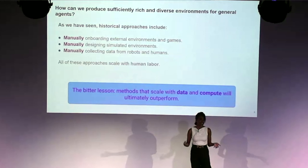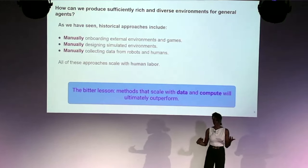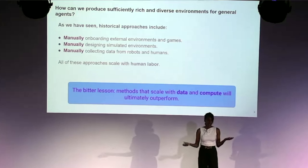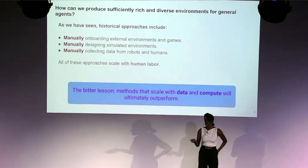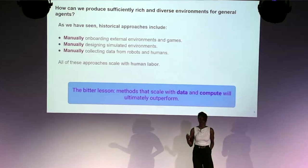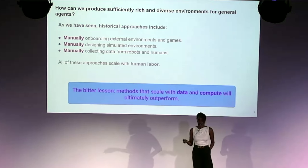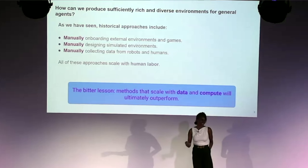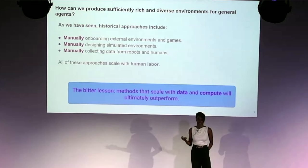To train generalist RL agents at scale, we need more environments. One approach is to build environments ourselves, but that requires writing code and specifying reward functions and actions. Another is to use pre-existing environments like Atari or OpenAI Gym, but converting those is not easy to scale. Neither approach is going to give us the data we need because both require a lot of human labor. Following the bitter lesson from Rich Sutton, approaches that utilize scale — scaling data and compute — are going to be the ones that prevail.